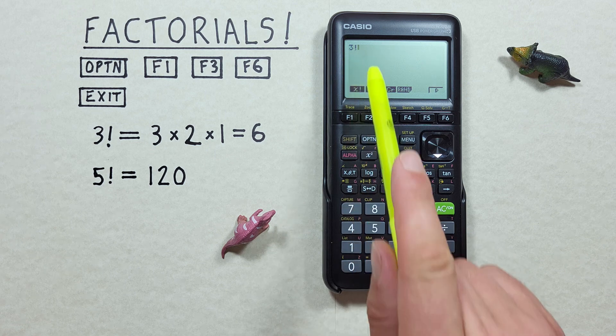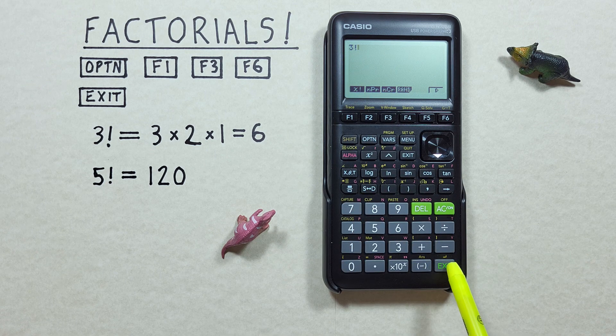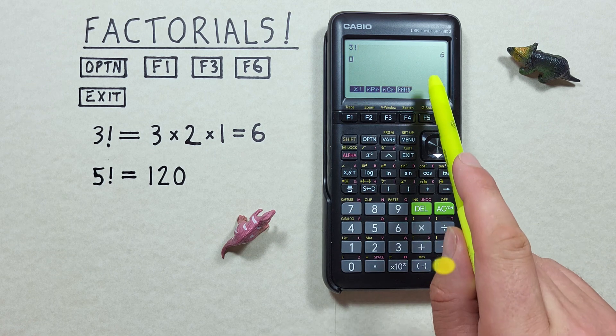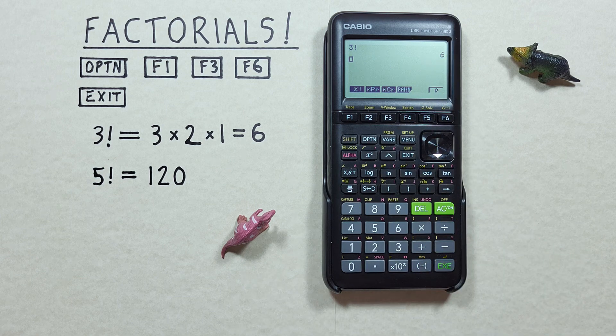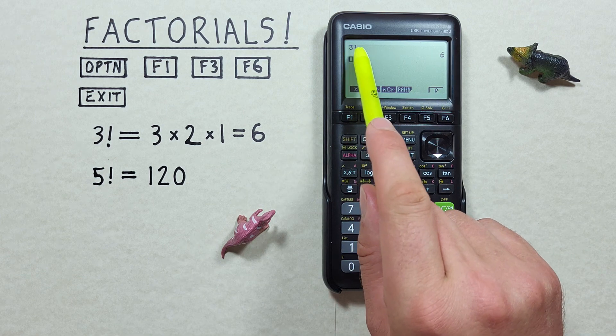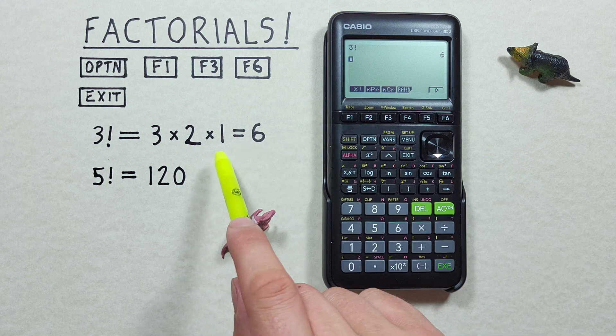So now we have 3 factorial and if we press the EXECUTE key we see we get a result of 6. So 3 factorial is equal to 6 which is correct.